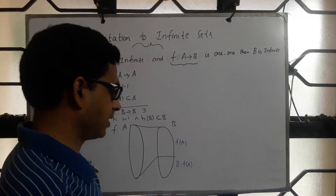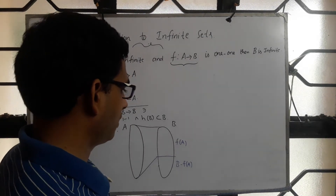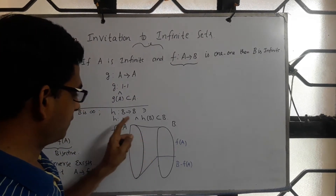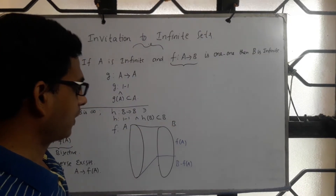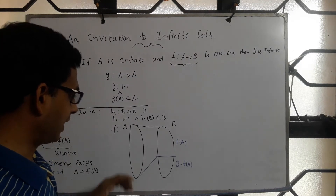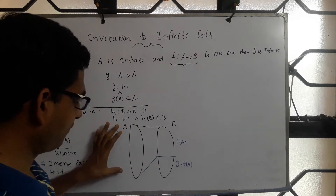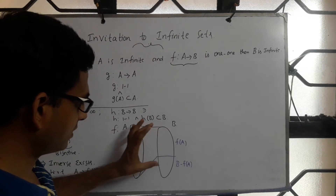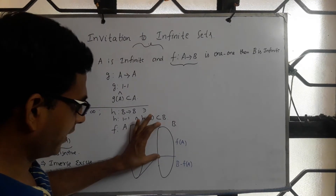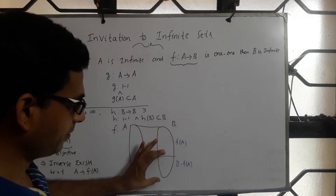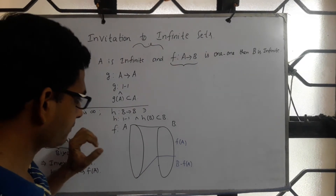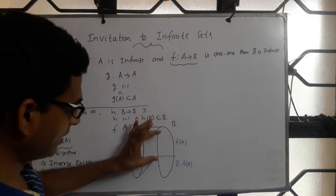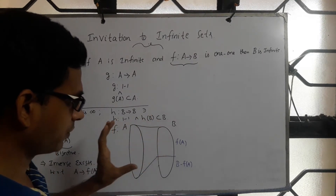That is our goal: to come up with h from B to B. What I will do is focus on the map f from A to B. B can be seen as f(A) and B minus f(A). All of A is mapped to the f(A) part, and the part B minus f(A) has no preimage.